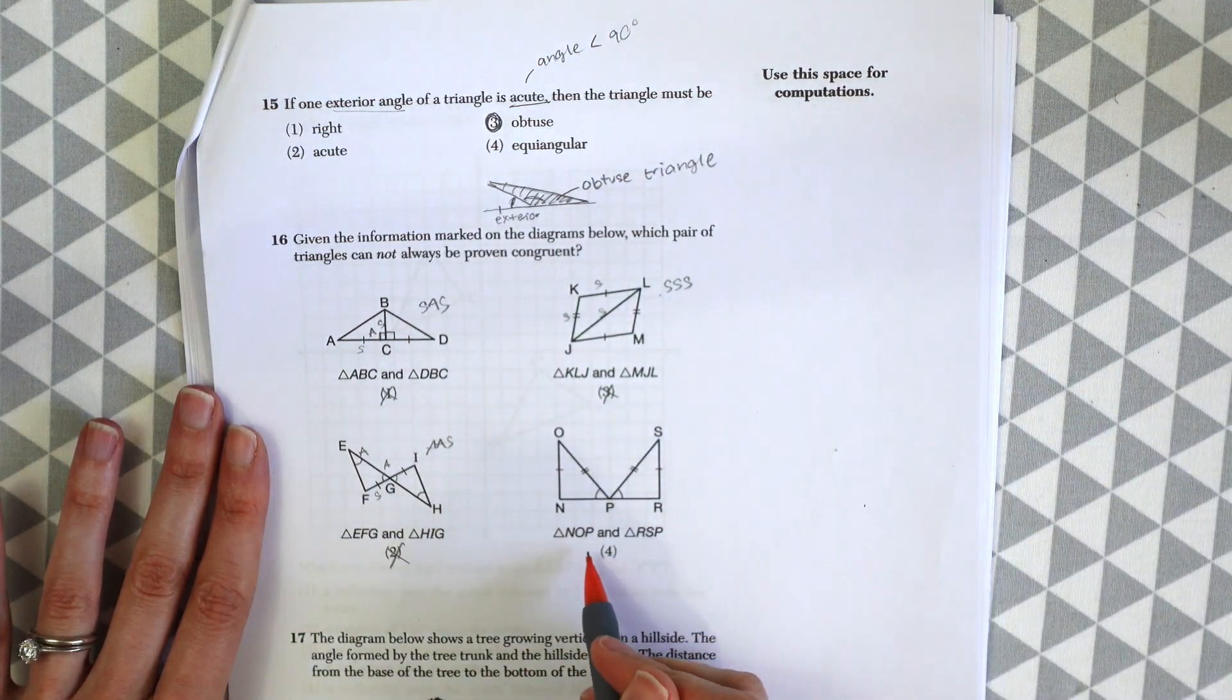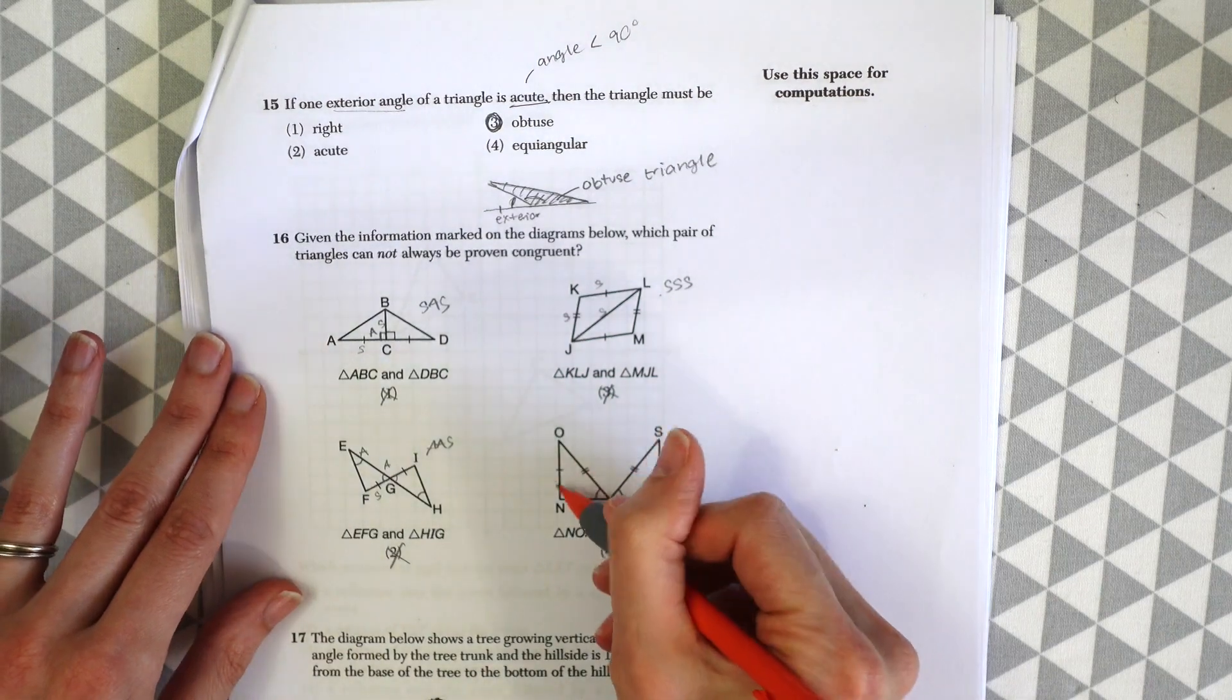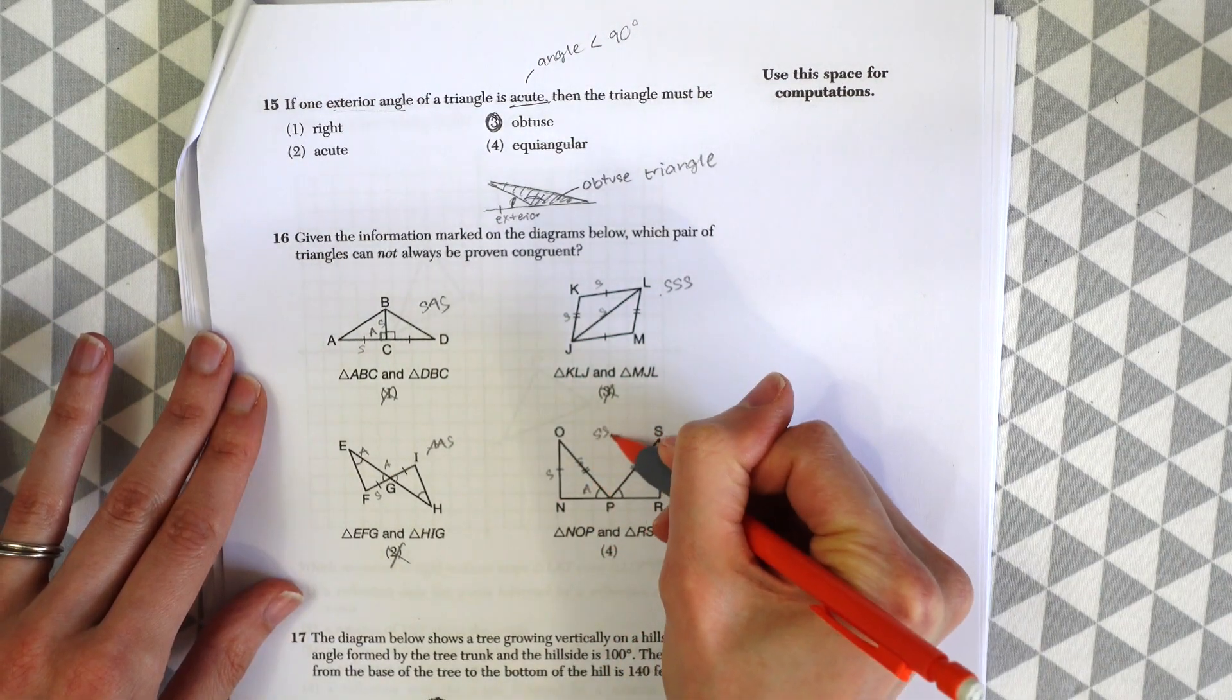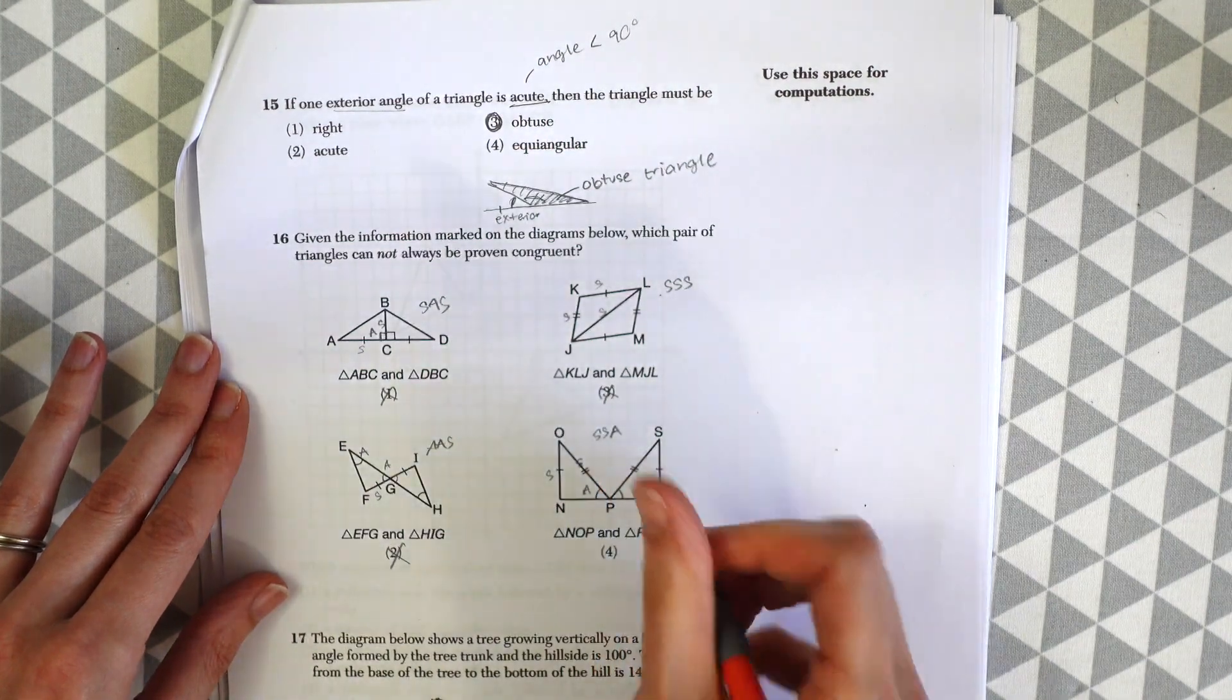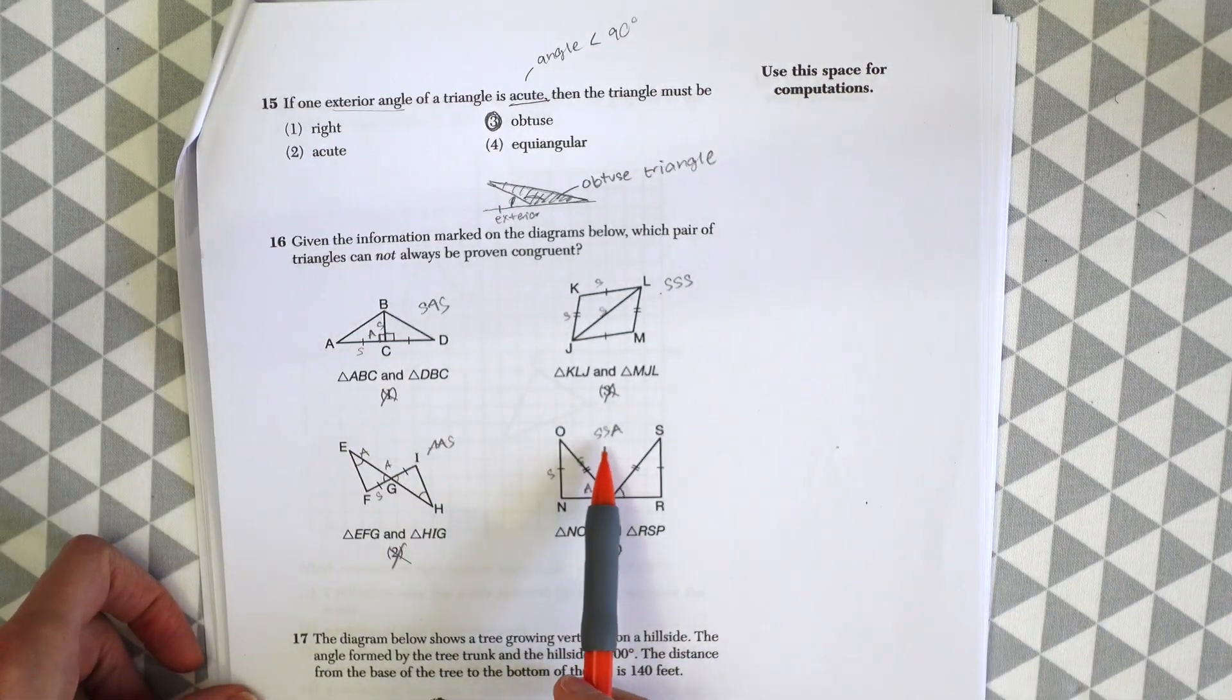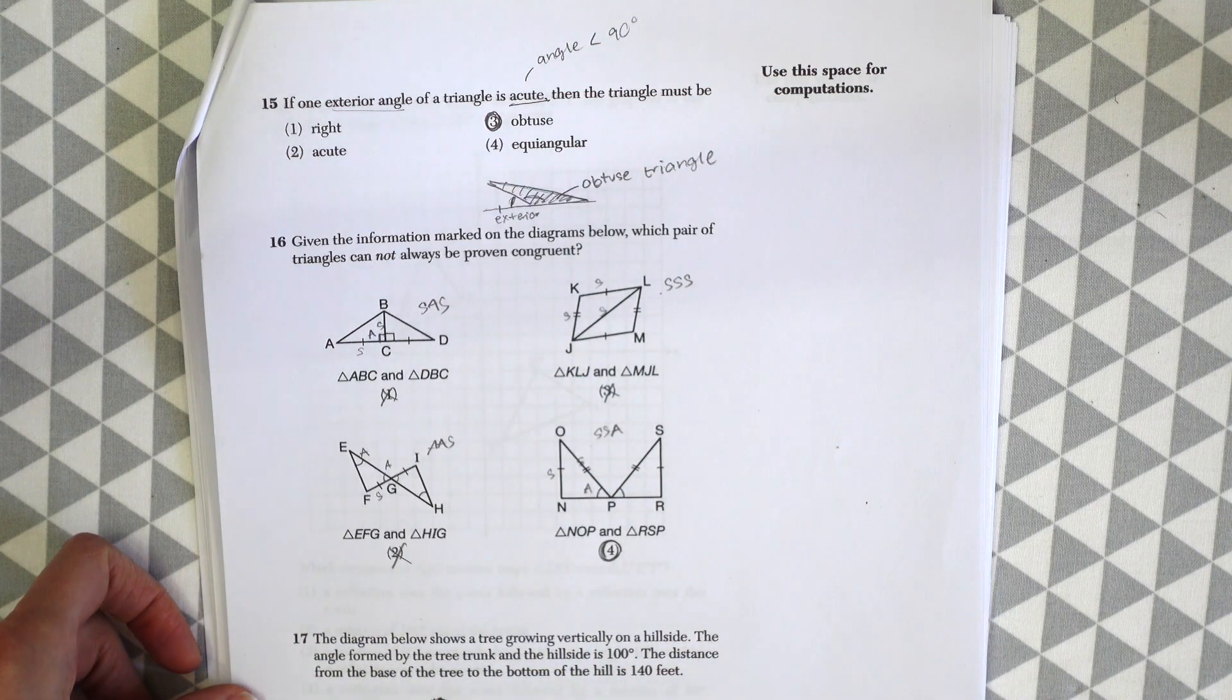And then the last one, so this by process of elimination must be our answer. But let's look at why. There's a side, a side, and an angle. So side, side, angle does not work. So we know we can't, we can never prove triangles congruent using side, side, angle. So this is going to be our answer. A good way to remember this is to realize that side, side, angle spells something backwards, and that's how you know that it's wrong.